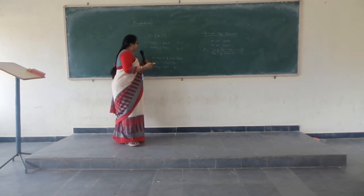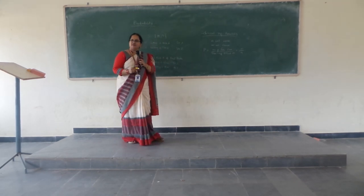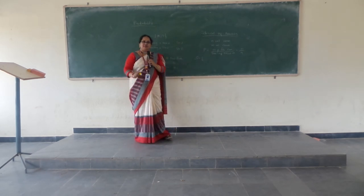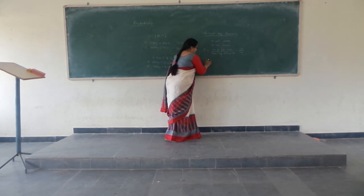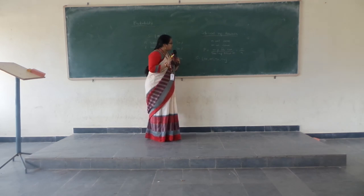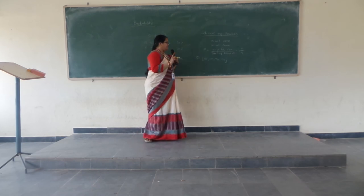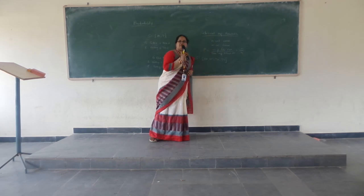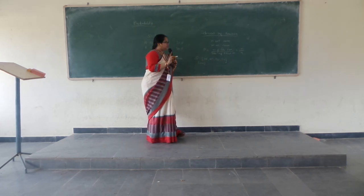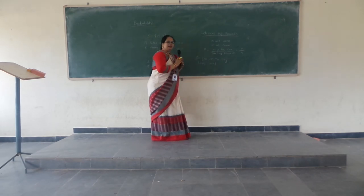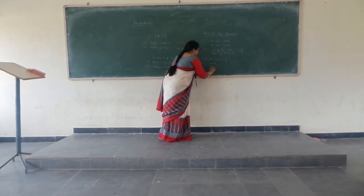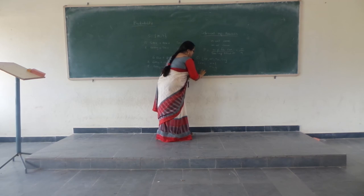Let us see one example. If we are tossing two coins, the sample space consists of all possible outcomes: two heads (HH), head-tail (HT), tail-head (TH), and tail-tail (TT). The problem is: what is the probability of getting two heads? According to the definition, the number of favorable cases is 1 (only HH), and the total number of exhaustive cases is 4. So the probability is 1/4.